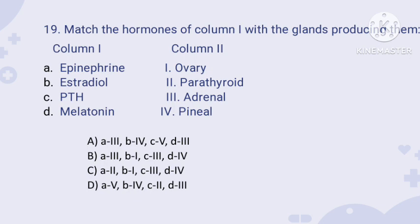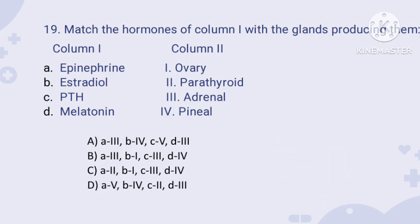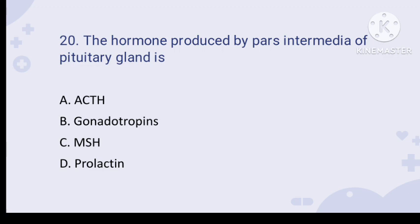Question number nineteen: match the hormones of column one with the glands producing them in column two. Column one: epinephrine, estradiol, PTH, melatonin. Column two: ovary, parathyroid, adrenal, pineal. Epinephrine is produced by the adrenal gland, estradiol by the ovary, PTH by the parathyroid gland, and melatonin by the pineal gland. The right option is A3, B4 — option B.